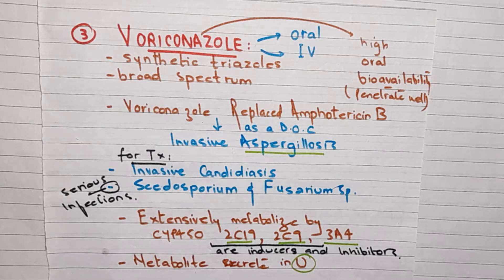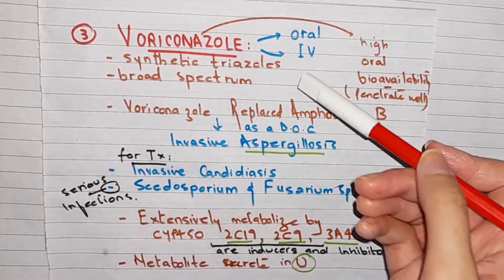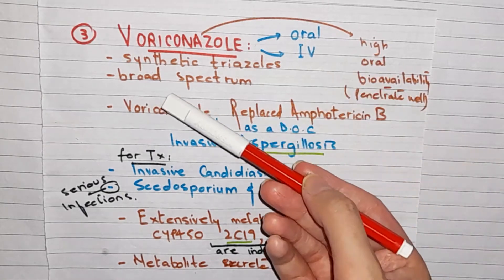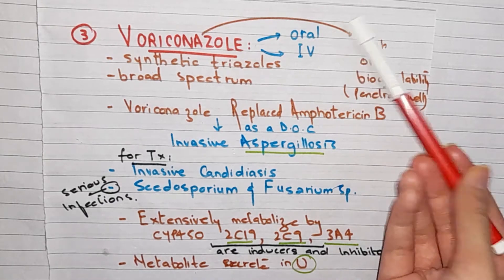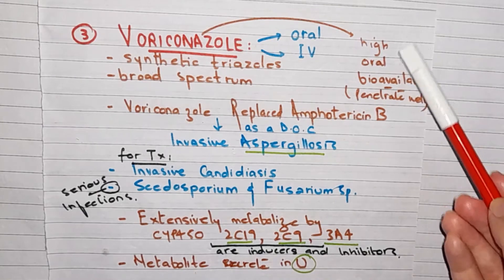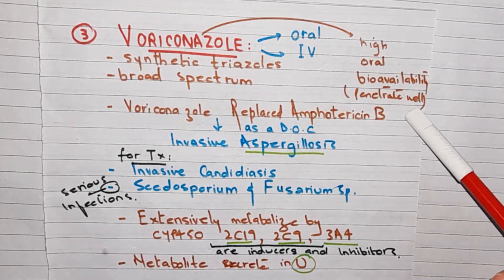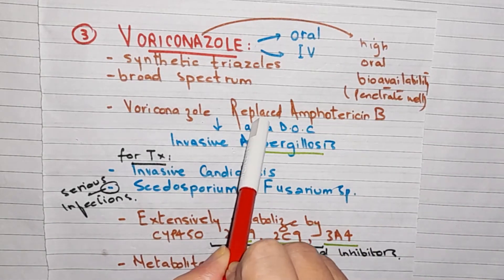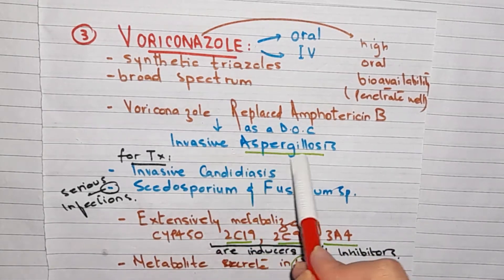So what is Voriconazole? Voriconazole is a synthetic triazole which is related to fluconazole. It is a broad spectrum drug. Voriconazole is available in both oral and IV formulations, with high oral bioavailability and good tissue distribution.